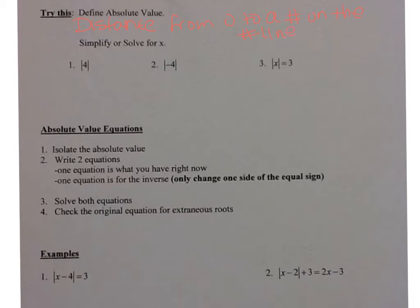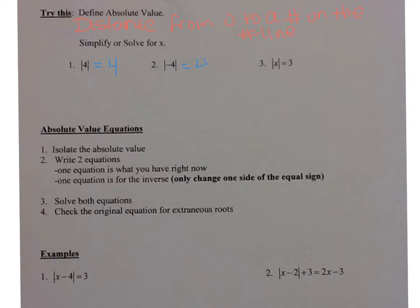That's the reason why when you find absolute value, it's always positive — because distance can't be negative. When you're asked what's the absolute value of four, we're talking about the distance from zero to four on the number line, and that is four units. Similarly, the absolute value of negative four is the distance from zero to negative four, which is also four units — so it's positive four.